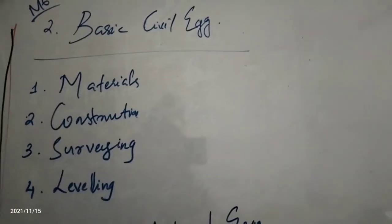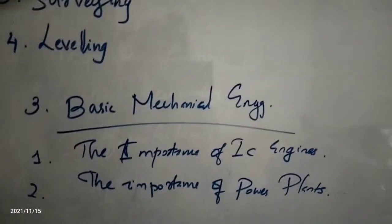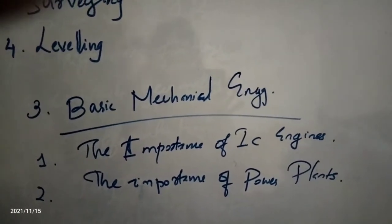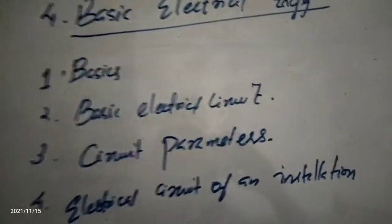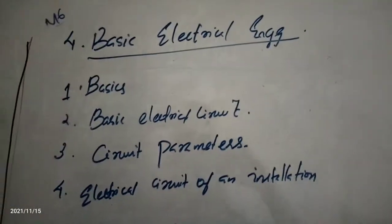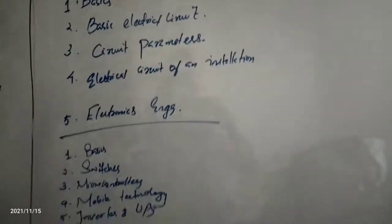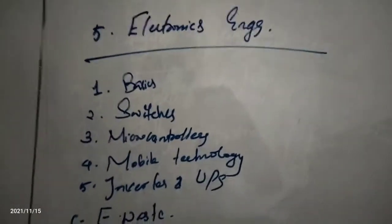The basic civil engineering topics include materials, construction, surveying, and leveling that we studied in first year. For mechanical engineering, the important topics are IC engines and power plants. Electrical engineering covers basics, circuit parameters, essential circuits, and installation. Electronics engineering includes basics, switching, microcontrolling, mobile technology, inverters, and UPS.